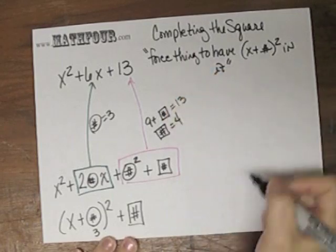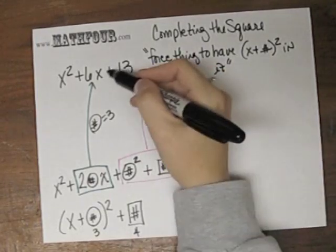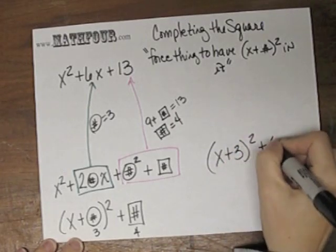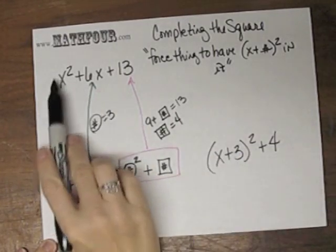So I've completed the square with this and gotten to x plus 3 squared plus 4 is really what this is.